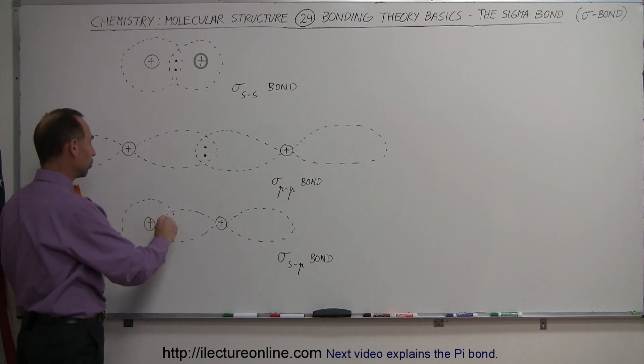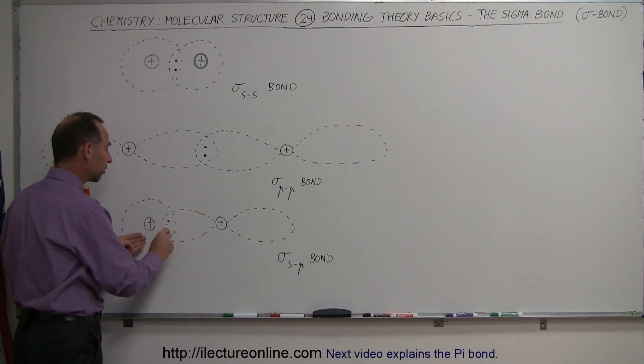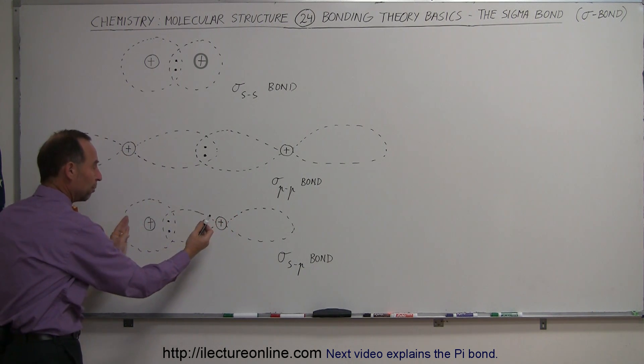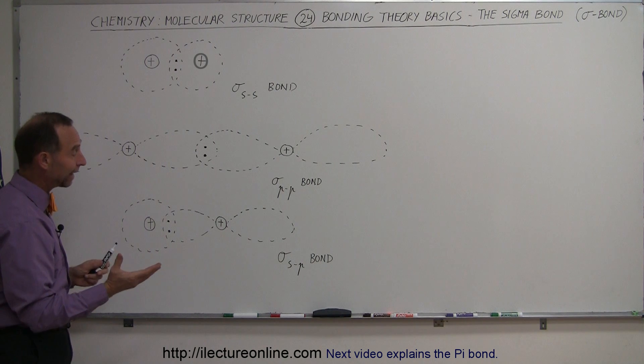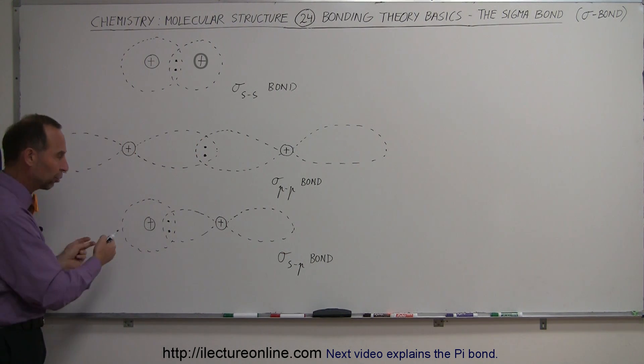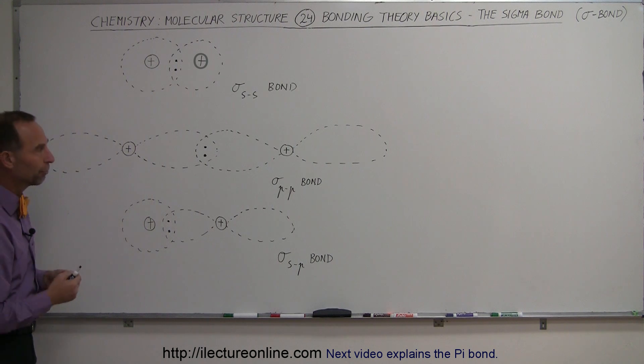When they come together, they do share those two electrons, forming again a region between them where the two electrons can exist in phase, forming that negatively charged region, bringing the two positive nuclei close together. In that case, we called it a sigma-sp bond because it was formed between an s orbital from one atom and a p orbital from the other atom.